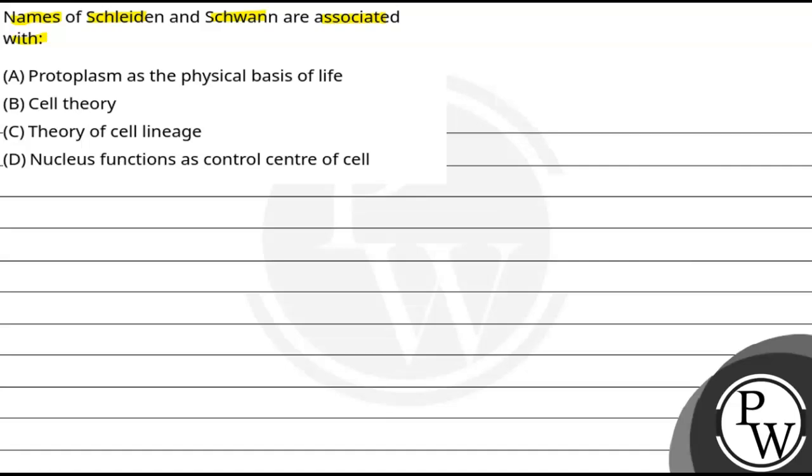If we talk about key concepts, then that will be cell theory. Now, if we know what cell theory is, then we can say that this is the theory that was proposed by two scientists, whose first name is Theodore Schwann.